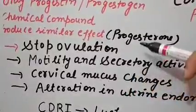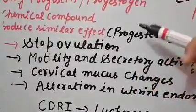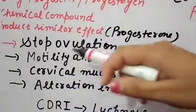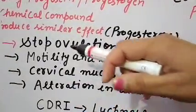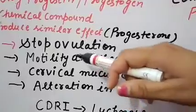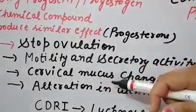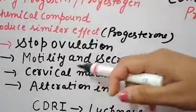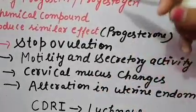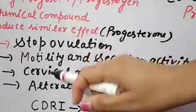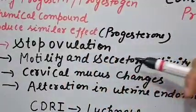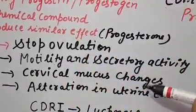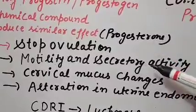Motility of the ovum is reduced when pills are taken. Next is cervical mucus changes. In the cervix region, mucus is present which provides motility to the sperm — allowing it to move through the cervix to the uterus. If there is a change in the cervical mucus, fertilization will not occur.